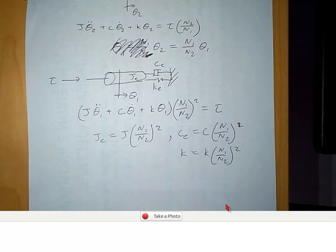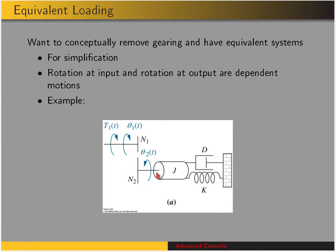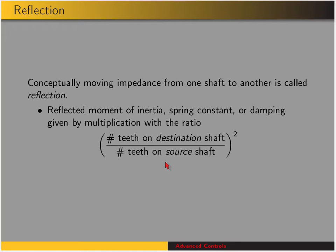This concept of finding equivalent loadings through a gear ratio or gear reduction is called reflection. The reflected moment of inertia, spring constant, or damping — the reflected impedance — is given by multiplying the original impedance by the square of the ratio of teeth on the destination shaft to teeth on the source shaft. So we're squaring the gear ratio, and that's how we reflect these impedances. We derive this by starting with the free body diagram, then substituting displacements using the gear ratio.